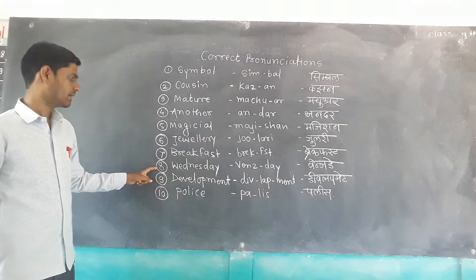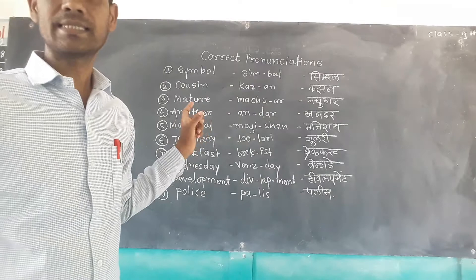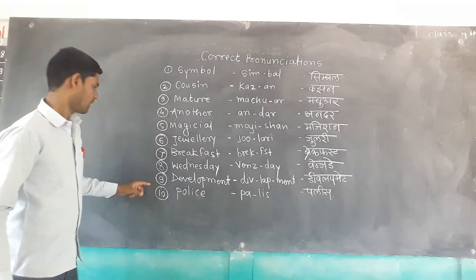Number eight — 'Wednesday.' Most people mispronounce this word. The correct pronunciation is 'Wednesday,' not 'Wednesday.' It is 'Wednesday.' Similarly, the next day is 'Thursday.'